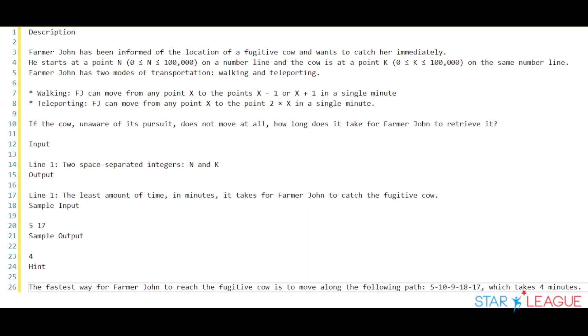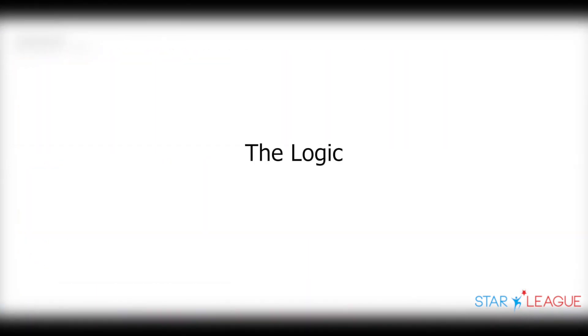The example we are given is 5 and 17, with the sample output of 4, meaning Farmer John starts at position 5 on the number line, and the cow starts at position 17. The output we should receive is that it takes 4 minutes for the farmer to catch the cow. So how do we approach this problem? We are going to use BFS, or breadth-first search algorithm, to solve this problem.